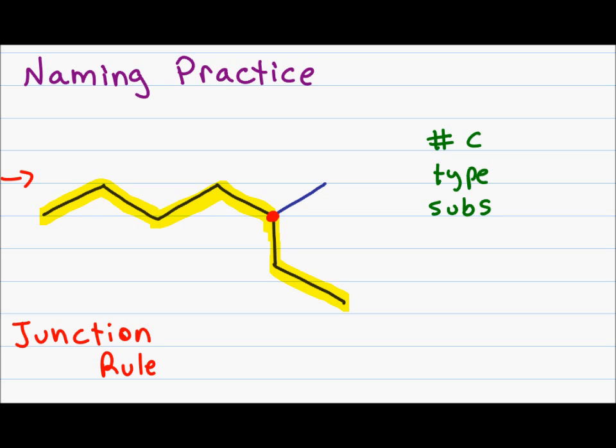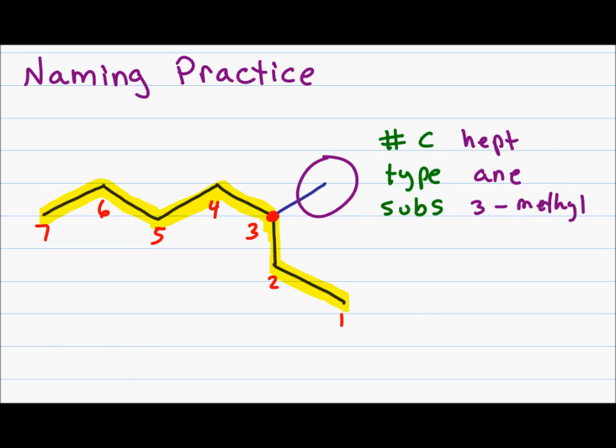Now I have to number the chain. I have the option of starting from the left or from the right. Recognize that if I start counting from the right, my methyl substituent has a number 3, but if I start counting from the left, then my methyl substituent gets a number 5. So I know I have to start from the right and I count a total of seven carbons, giving me a first name of hept. I see only single bonds, so I know that I have ane. My substituent, which occurs on carbon 3, has only one carbon, making it a methyl. Putting my molecule together, I start with my substituent and then add the first and last name for a final name of 3-methylheptane.